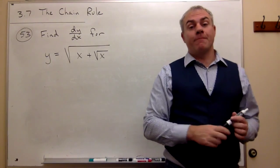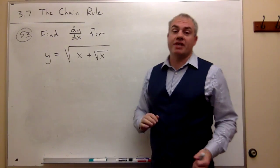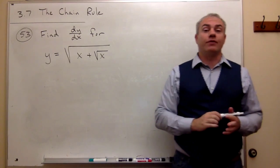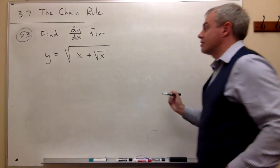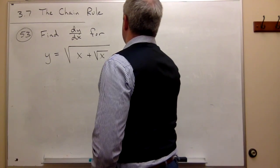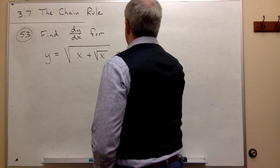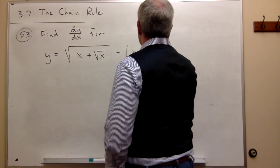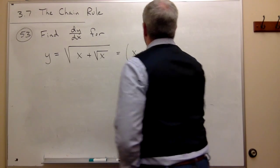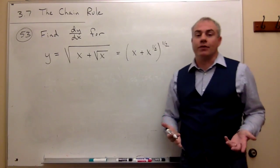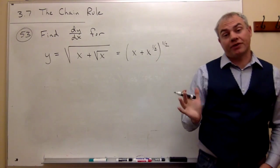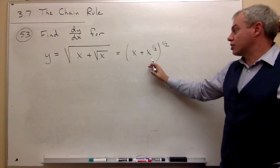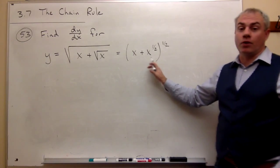Now some people don't like working with square roots as much. That's fine. If you don't, we could change this all into fraction powers. So if I would prefer, I could write this as x plus x to the one half, to the one half. If you prefer to work with this guy rather than this guy, that's perfectly fine. And so let's just go ahead and change it over and work with this one.